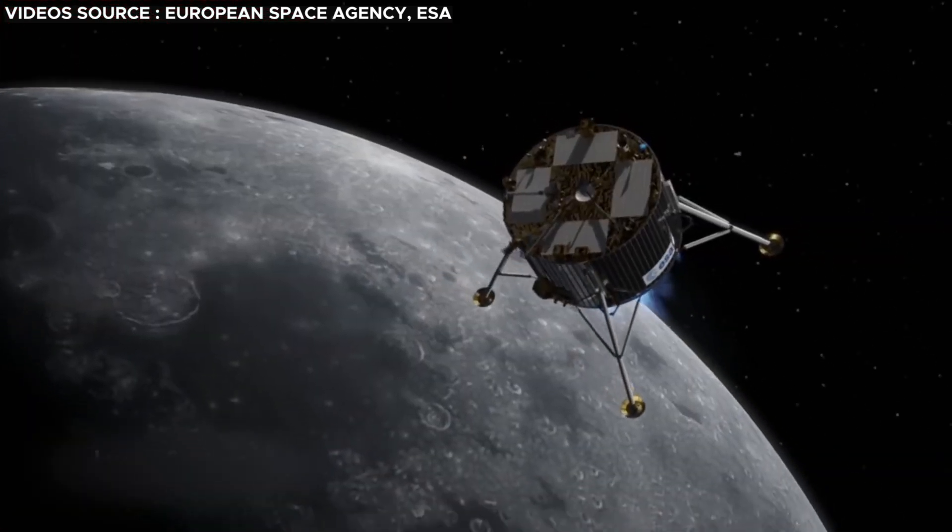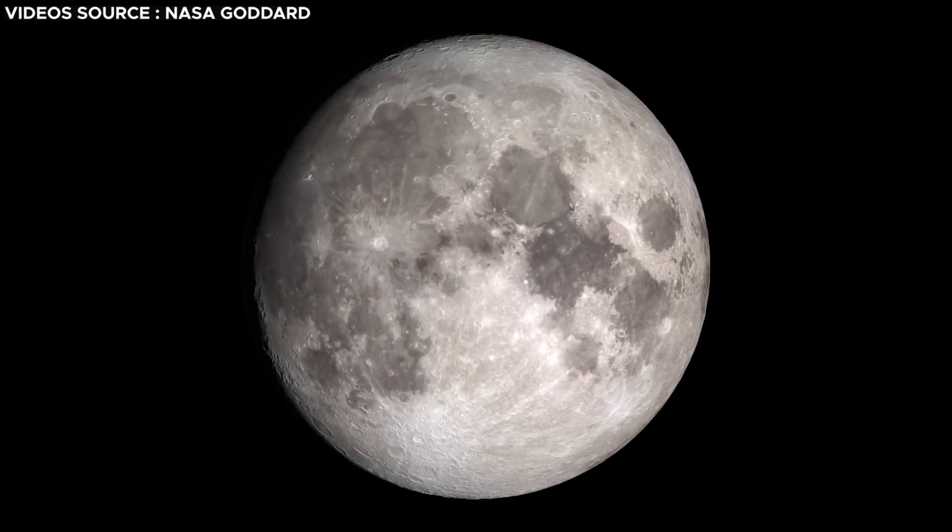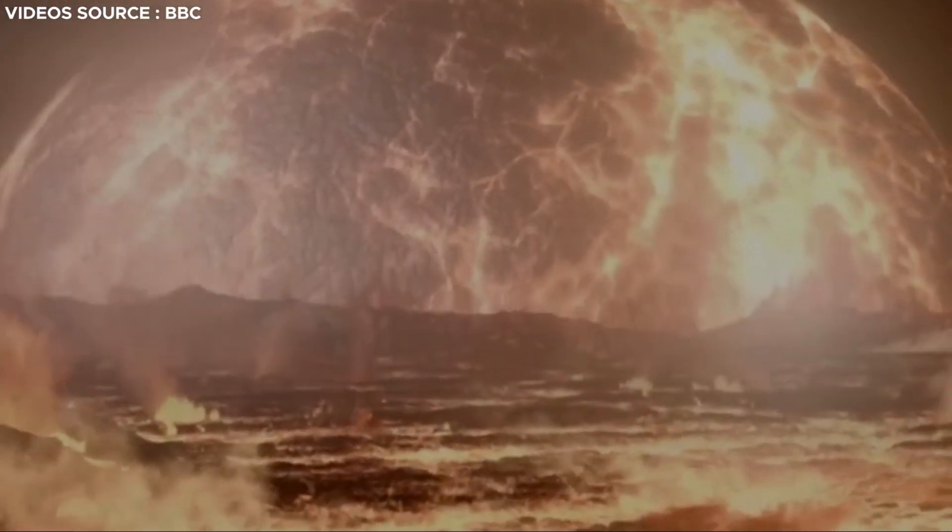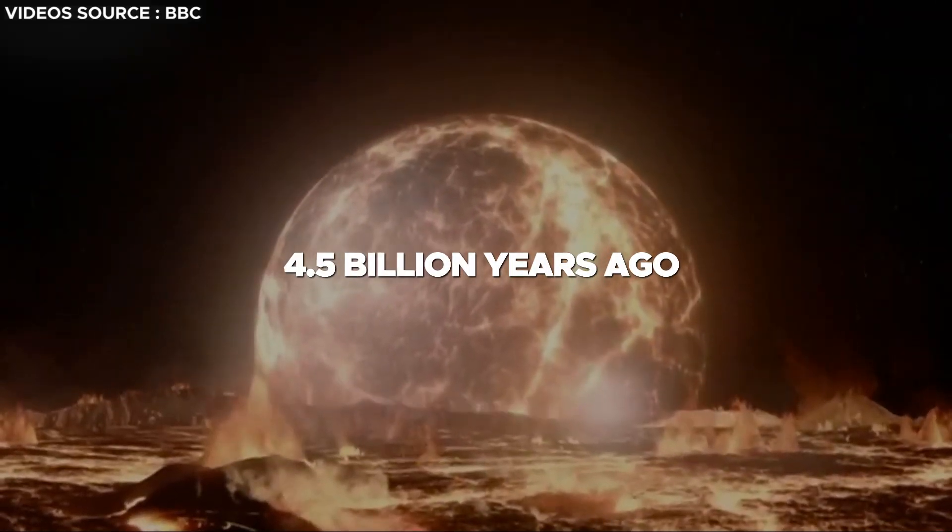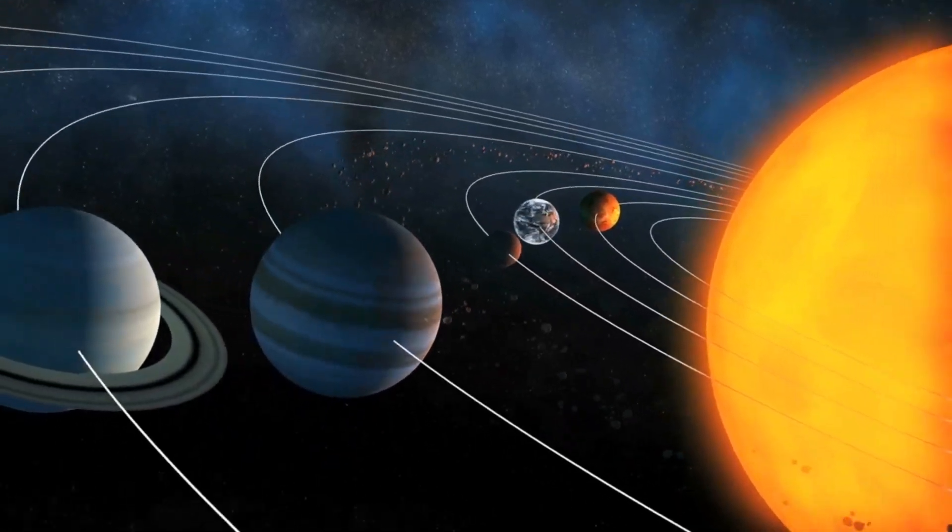Before we get to the scientific intricacies, it's important to explore the lunar history. A predominant hypothesis proposes that the moon came into existence approximately 4.5 billion years ago, shortly following the formation of the solar system.